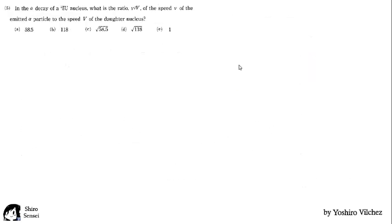Final question is, in the alpha decay of the uranium nucleus, what is the ratio Vₐ over Vₓ of the speed Vₐ of the emitted alpha particle to the speed Vₓ of the daughter nucleus?